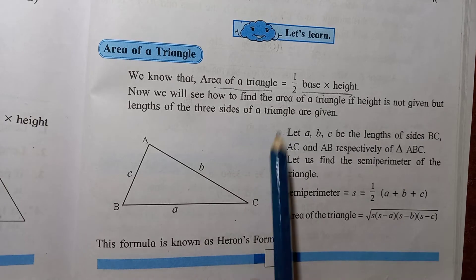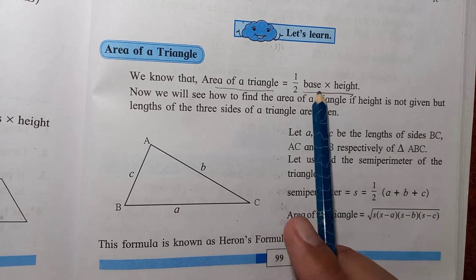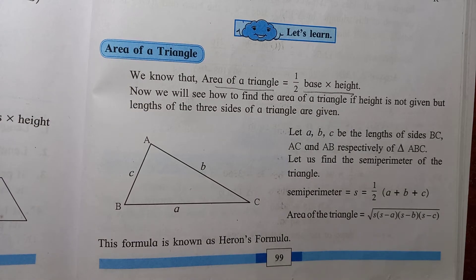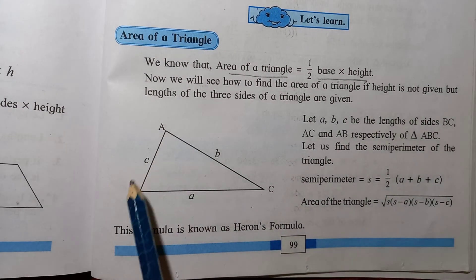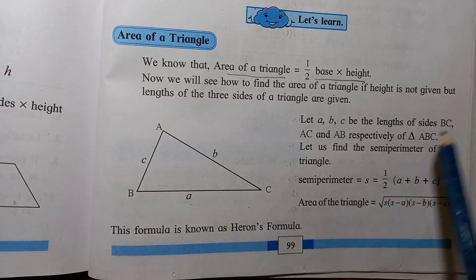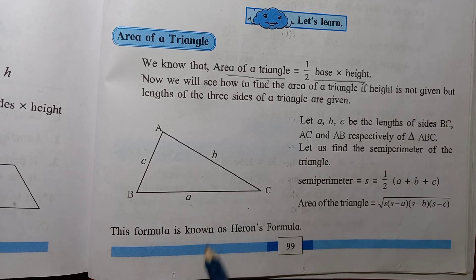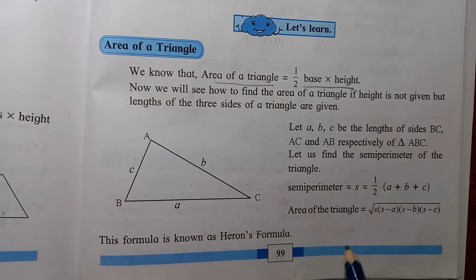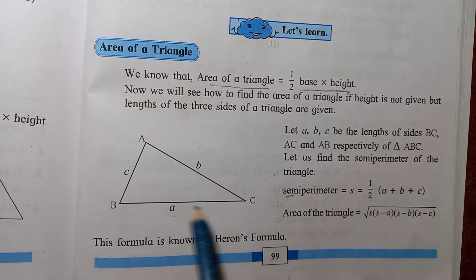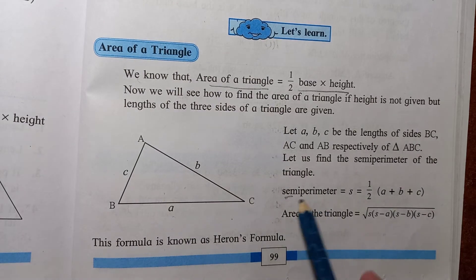But if the base and height are not given, or if it is a scalene triangle where all sides are different — for example triangle ABC where all sides a, b, c are different — then how do we find the area? Here we use a new formula. First, you have to find the semi-perimeter.